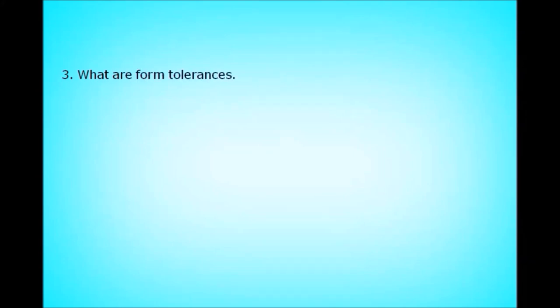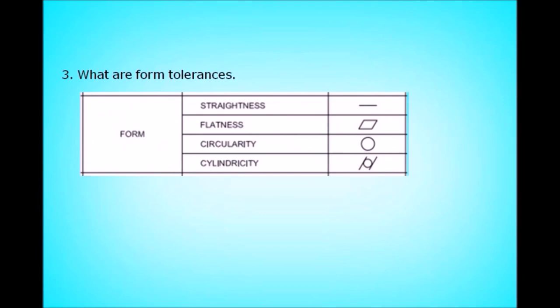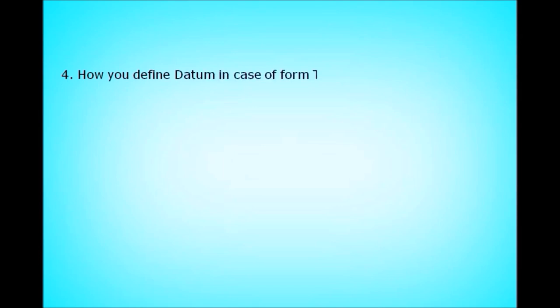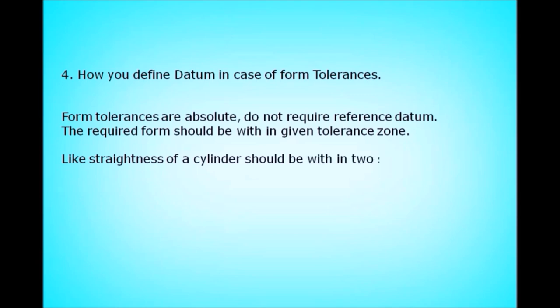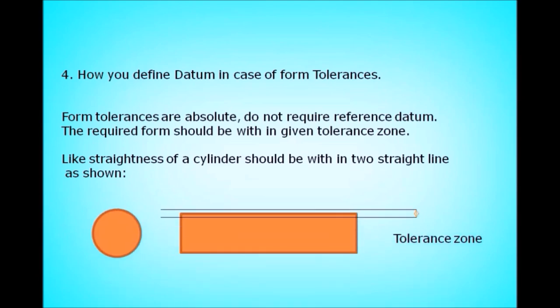What are the form tolerances? The different form tolerances are straightness, flatness, circularity, and cylindricity — their symbols are shown in the table. How do you define datum in case of form tolerances? Form tolerances are absolute and do not require any reference datum. The required form should be within the given tolerance zone, irrespective of any datum, and these tolerance zones are absolute.